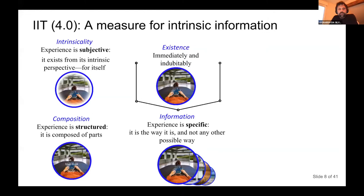The third property is information: in IIT, information means that experience is specific — it is the way it is and not any other possible way. It's not a fuzzy thing that's everything at once, but something more specific than others. It can be fuzzy, but it's that specific fuzziness — not more fuzzy nor less fuzzy — and it's that particular experience and not any other possible experience you could imagine.